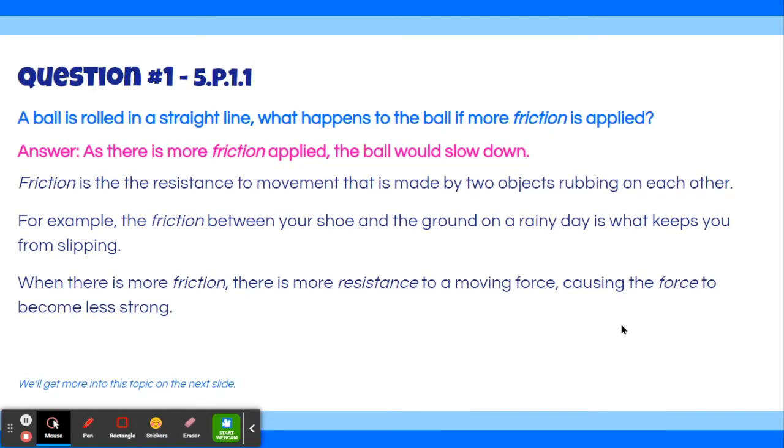This is because friction is a resistance to movement that is made by two objects rubbing against each other. So for example, the friction between your shoe and the ground on a rainy day is what keeps you from slipping and falling. When there is more friction, there is more resistance to a moving force, which causes the force to become less strong, and vice versa.